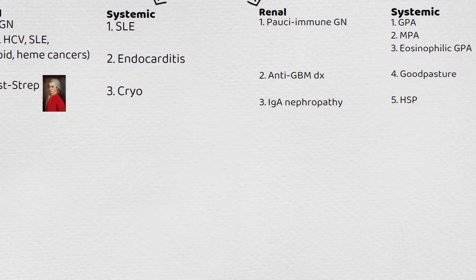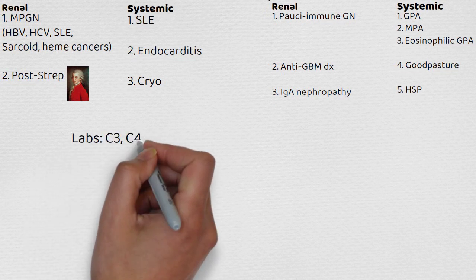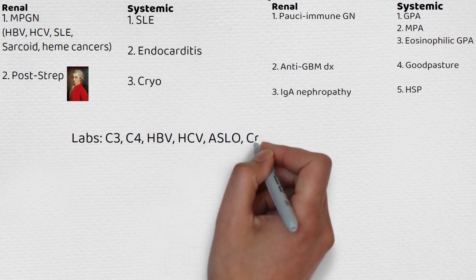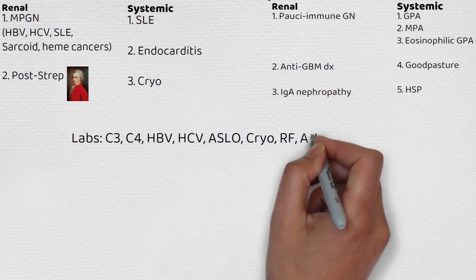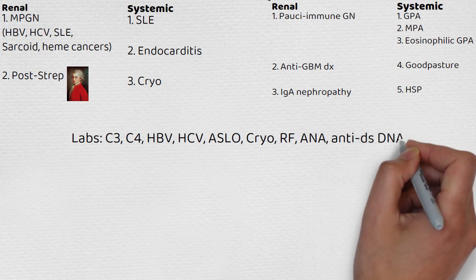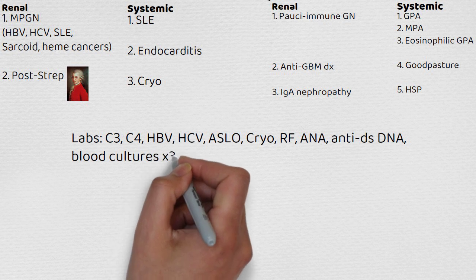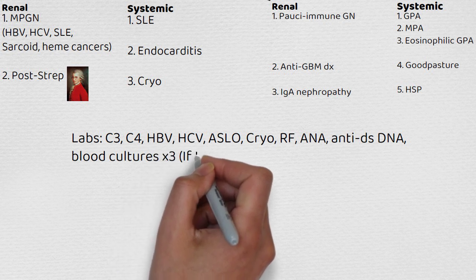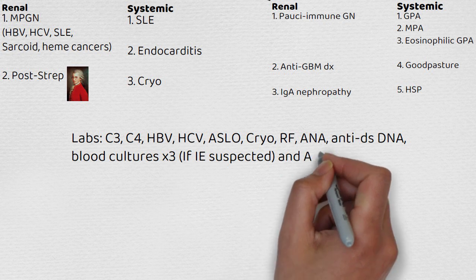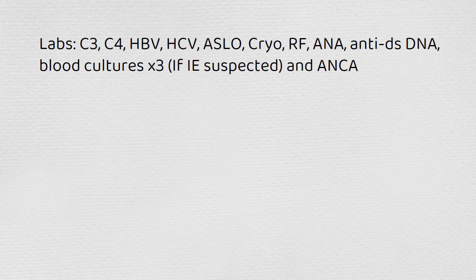Now that we know what all these diseases are, we know what labs to order: complements, hepatitis serology, ASLO, cryo and rheumatoid factor — because rheumatoid factor is a cryoglobulin — ANA, anti-dsDNA, blood cultures times three for the endocarditis piece especially if suspected, and then ANCA. So now we know, if you suspect acute GN, what to order.